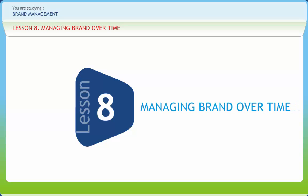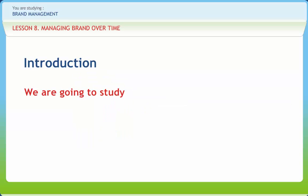Managing Brand Over Time. Brand extension is product innovation to surpass consumer expectations. It can increase profitability from offerings in more than one product category, and brand management needs proactive strategies to maintain brand equity. Brands can be managed over time by reinforcing the brand meaning and by making adjustments to the marketing program to identify new sources of brand equity.